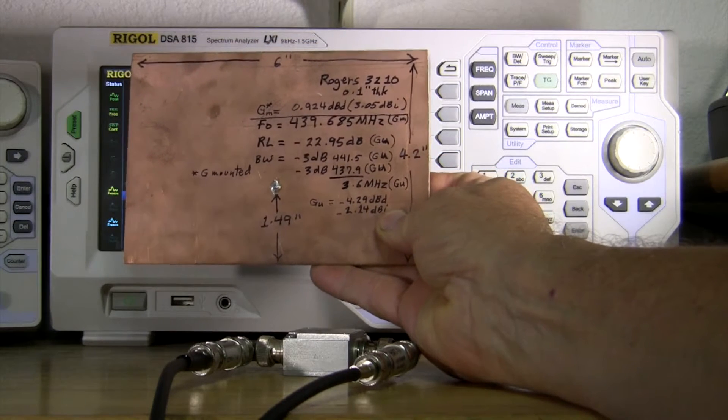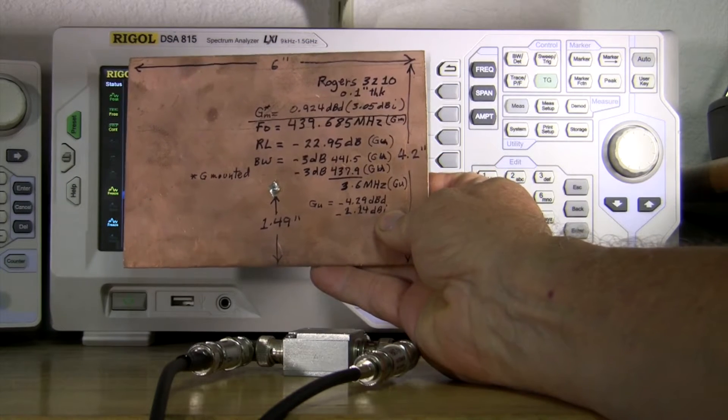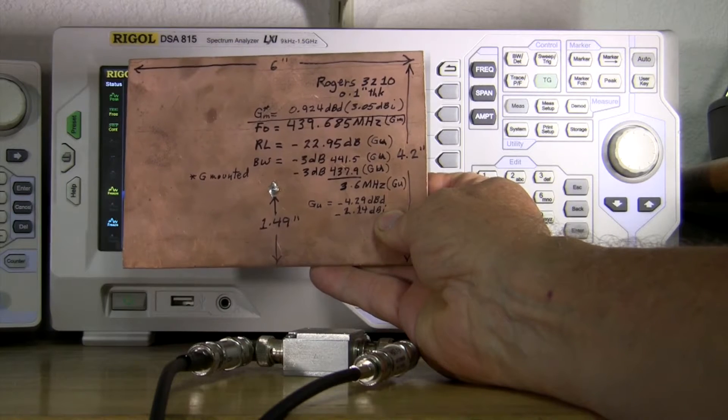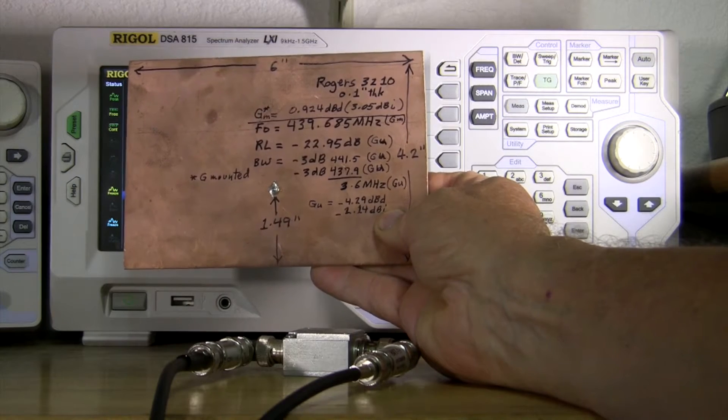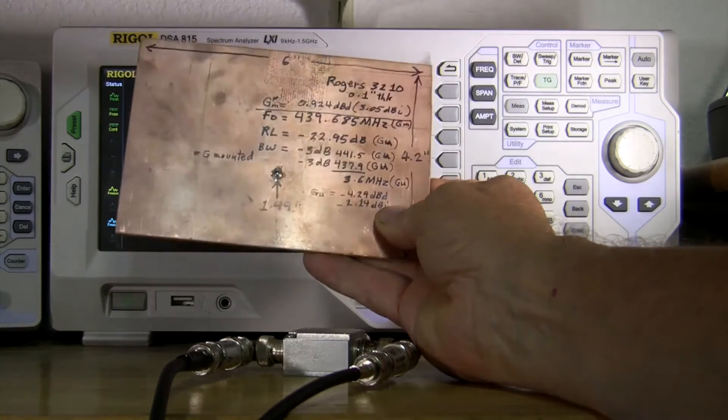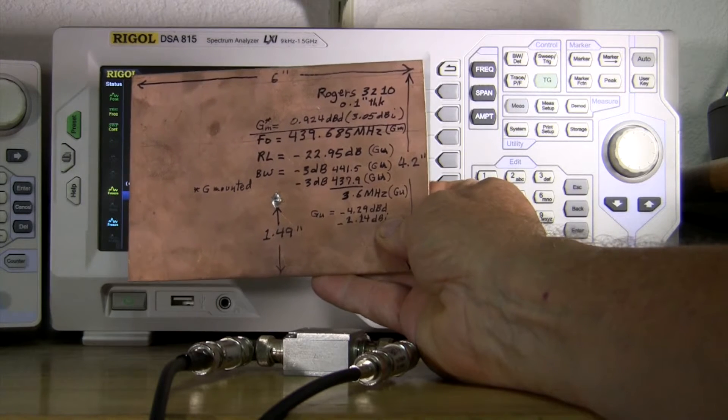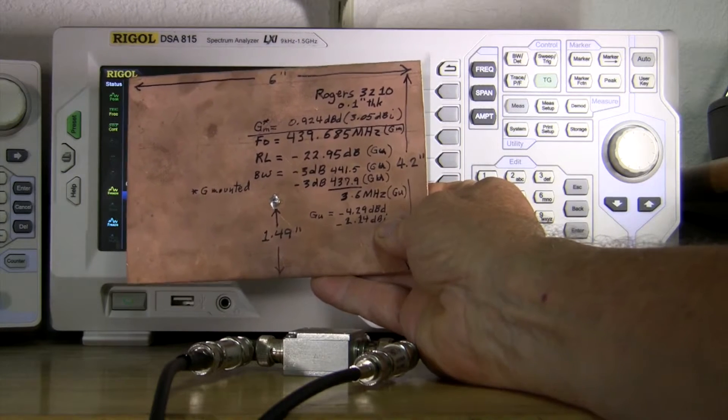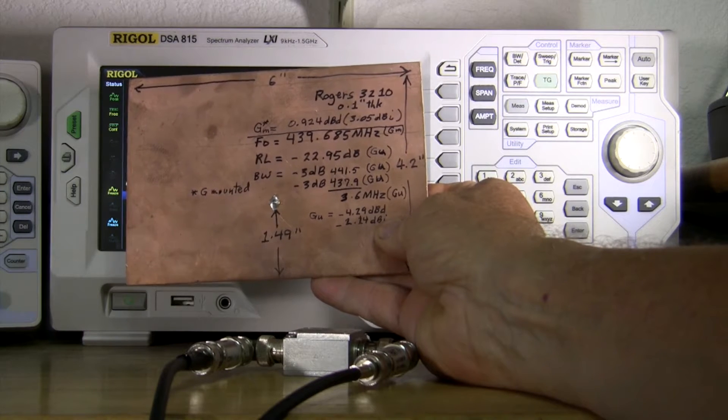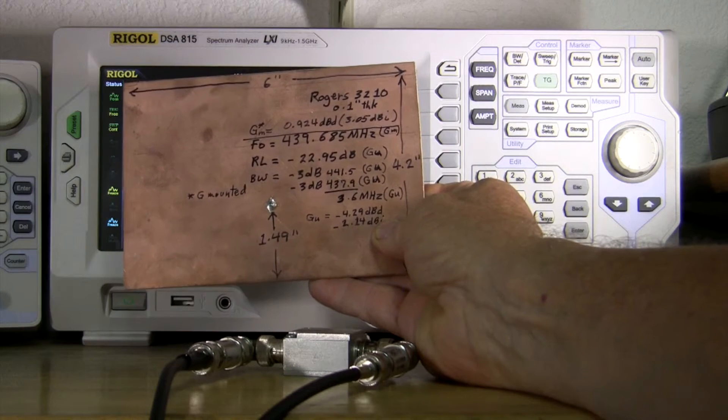It was designed for mounting on a metal surface. The output frequency unmounted, that's what I used as my indicator, was 439.685 megahertz, 22 dB, well almost 23 dB return loss.